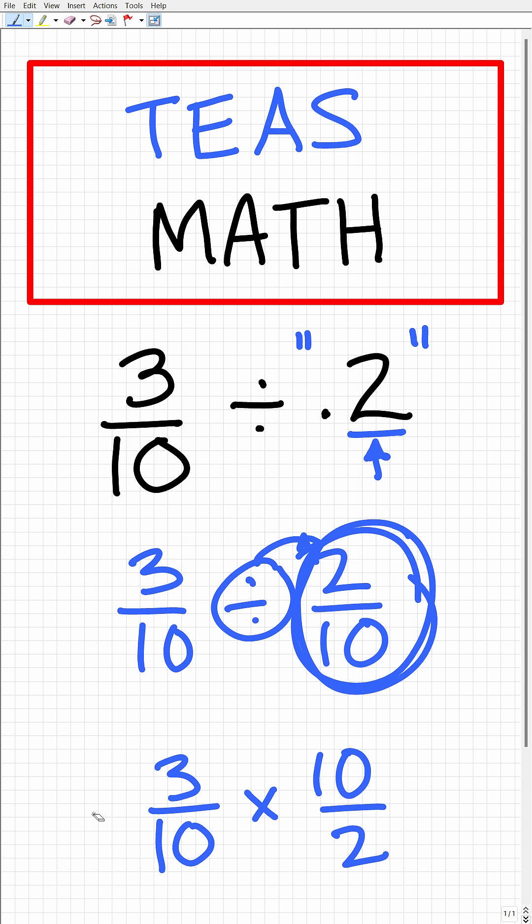Okay, so our last step now is to multiply fractions. And this is very easy because all we have to do is multiply the respective numerators and denominators. So what we're going to have here is 3 times 10 over 10 times 2. But you can see here that our tens will cross-cancel, leaving us with the final answer of 3 over 2.